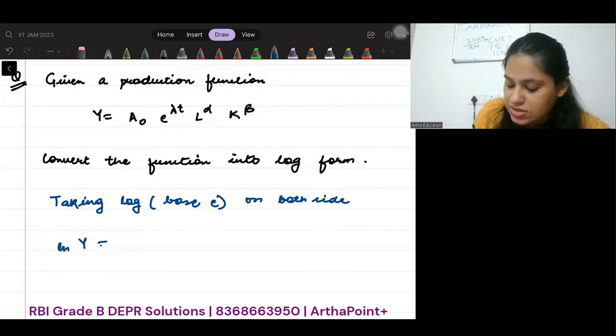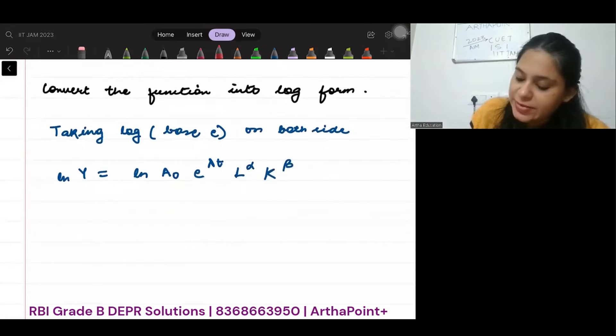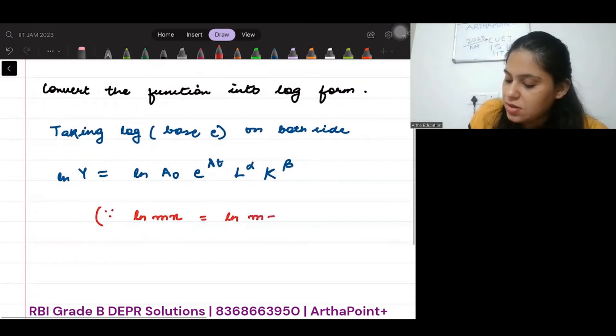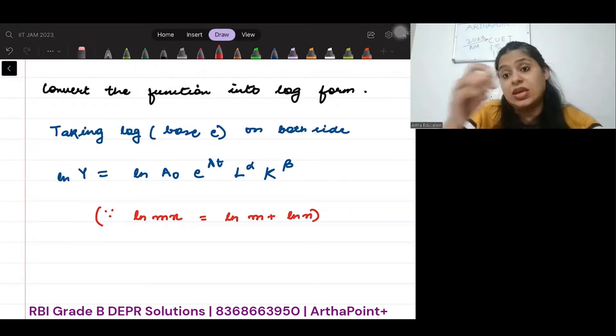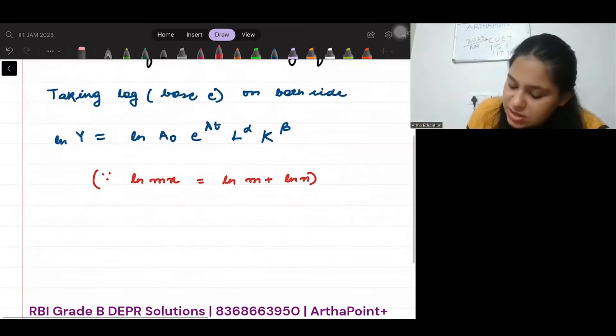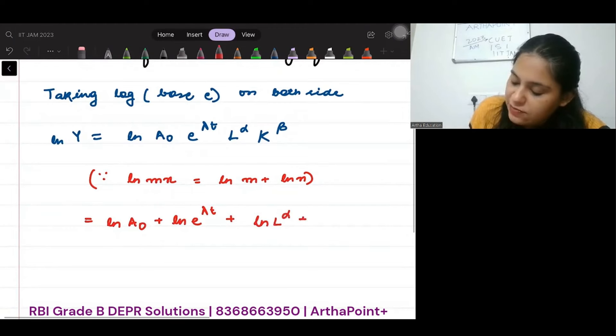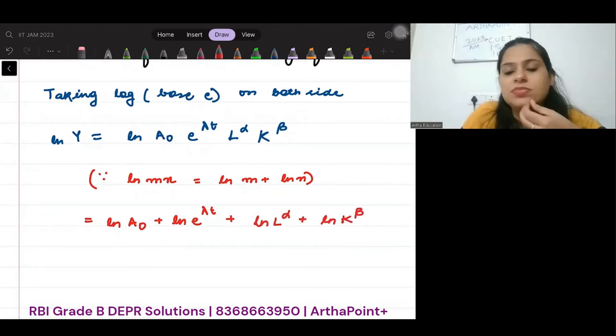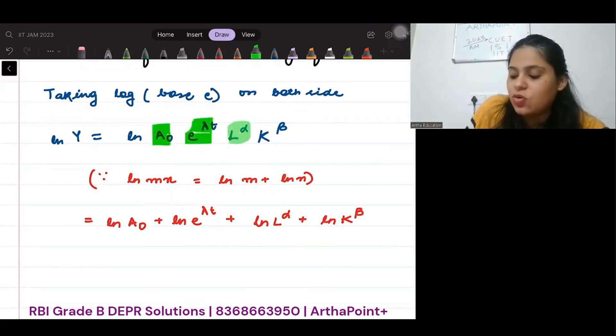So ln Y is equal to ln A0 e^λt L^α K^β. Now let's use the rule that ln(mn) is ln m plus ln n. We can break it. So we can rewrite this as ln A0 plus ln e^λt plus ln L^α plus ln K^β. These were different products, so we broke them up.